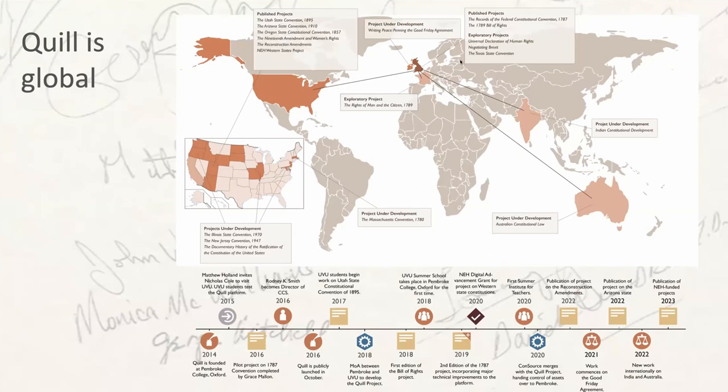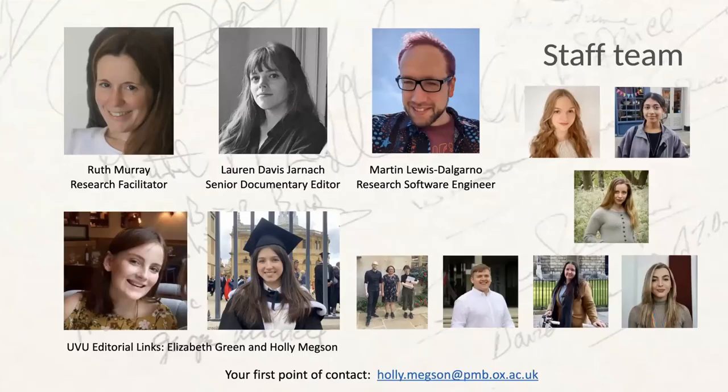There are also a variety of smaller and more exploratory projects and research collaborations in other places. You'll be happy to know that UVU is our most enduring partnership — we've had a formal collaboration between our institutions since 2018, with informal collaboration going on before that. With people using Quill all around the world, it's vital that we're all working to the same standards and taking a broadly similar approach to editing.